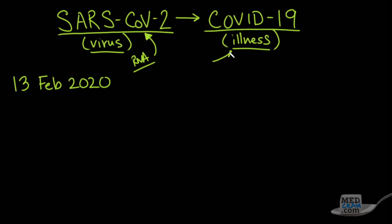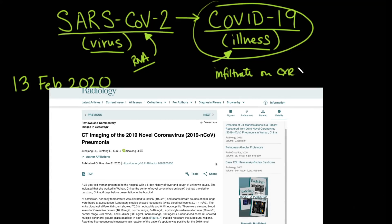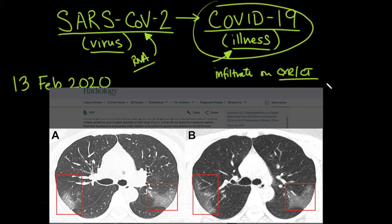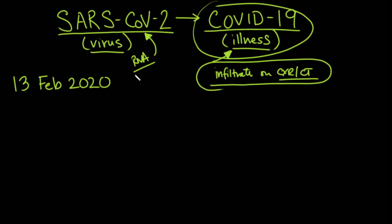They're looking at something that's not as specific but is much easier and more rapid to assess—looking at the illness characteristics, specifically infiltrates on chest X-ray or CT scan. These lung scans have been central in making a determination of whether or not we're dealing with the virus.